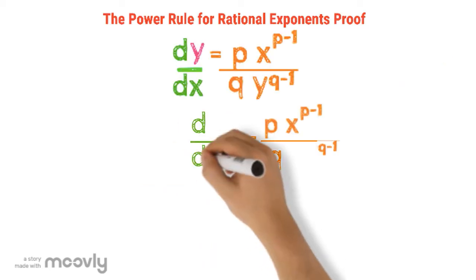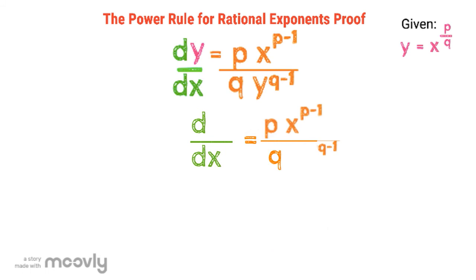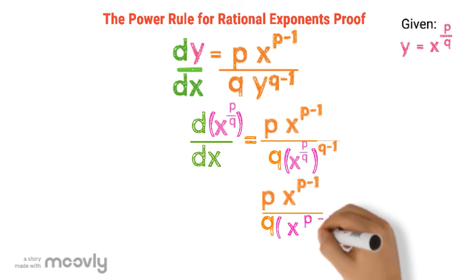Let's continue. I'm going to rewrite the equation again. Now notice that y equals x to the power of p over q. So let's go ahead and plug that in for the y values that we have. So let's work on the right side now. Let's multiply out the exponent in the denominator. That's going to give us p x to the power of p minus 1 over q times x to the power of p minus p over q.